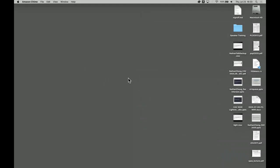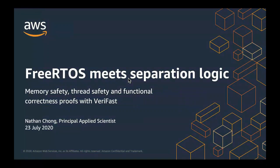Nathan Chong is next. Nathan is a principal scientist working on proving memory safety and thread safety for low-level code. He's going to talk about his experiences applying it to IoT and other applications.